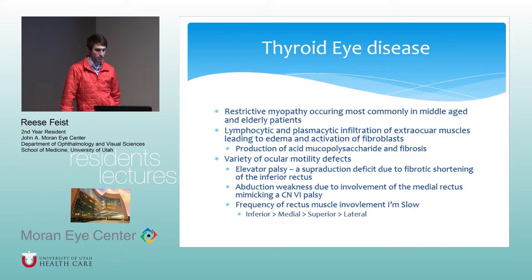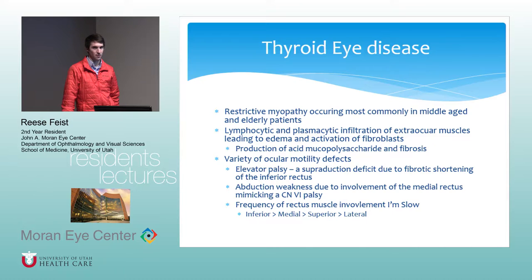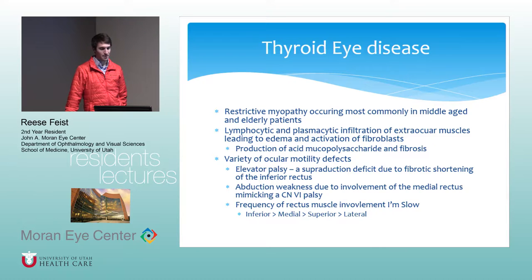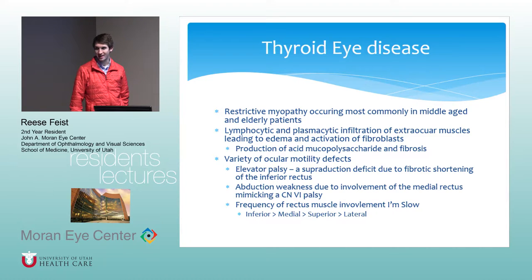Thyroid eye disease is the next one — it's a restrictive myopathy. Most commonly affecting middle or older aged patients, you get a lymphocytic and plasmacytic chronic infiltrate of the extraocular muscles, causing edema and activation of fibroblasts with production of acid mucopolysaccharide and fibrosis. This can give a variety of defects: an apparent elevator palsy from superduction deficit due to fibrotic shortening of the inferior rectus, abduction weakness due to medial rectus involvement mimicking a cranial nerve 6 palsy. The classic mnemonic for muscle frequency is 'I'm slow' — inferior, medial, superior, lateral.